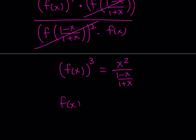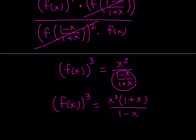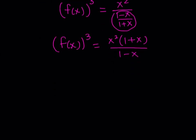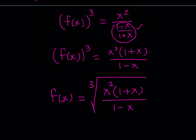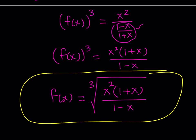Let's simplify the right-hand side: flip the fraction and multiply by x squared, giving x squared times (1 plus x) divided by (1 minus x), where x cannot equal 1. Since we're looking for f of x, we cube root both sides, giving f of x equals the cube root of x squared times (1 plus x) divided by (1 minus x). That's our answer, and this brings us to the end of the video. Tomorrow you'll see a video on Diophantine equations. Until then, take care, be safe, and bye-bye.